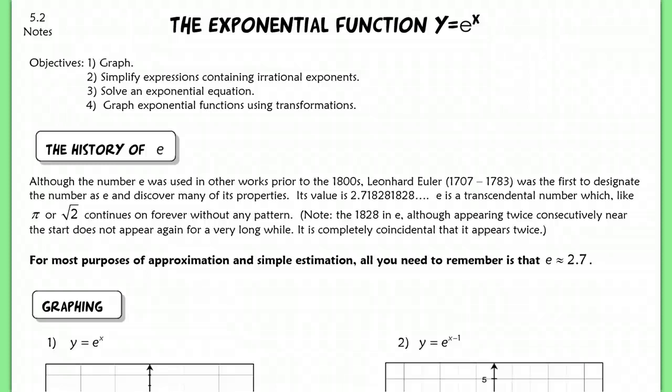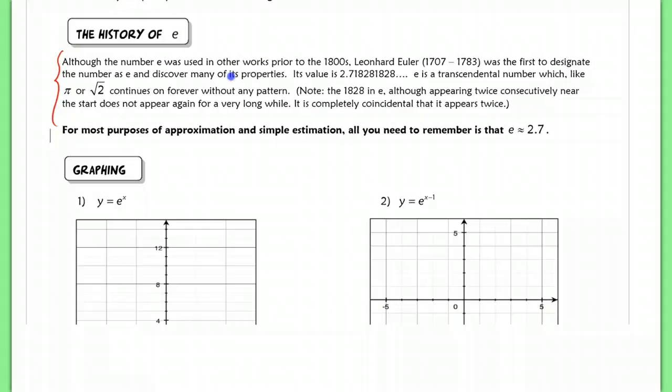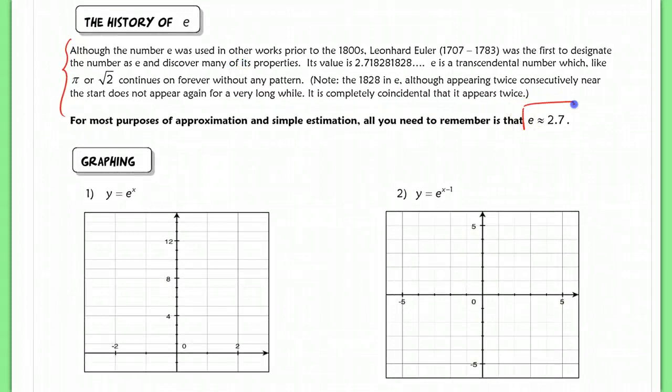This lesson is for section 5.2. We're going to be talking about the specific exponential function y equals e to the x, also referred to as the natural exponential function. Here is a very brief history on the number e. It's very similar to something like pi or square root 2 in the sense that it's irrational and it's going to continue on forever without any pattern. But what we want to know for the purposes of this course is that e is approximately 2.7.